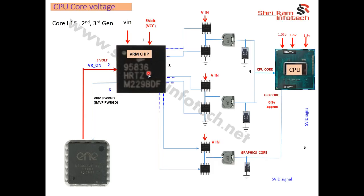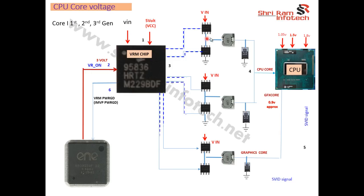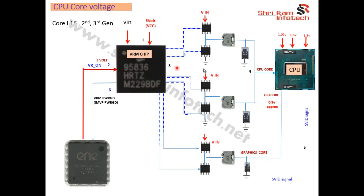Once the VRM chip receives the VR_ON signal, it generates pulses that trigger the MOSFETs. The 18V VIN voltage is present at the MOSFET inputs. As the MOSFET gates are triggered, a pulsing AC voltage is generated at the output. This pulsing AC voltage goes to the coils, and the coils block the AC component and pass the DC, which is then filtered by capacitors and delivered to the processor.